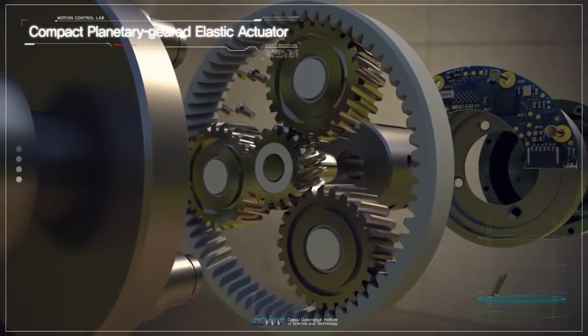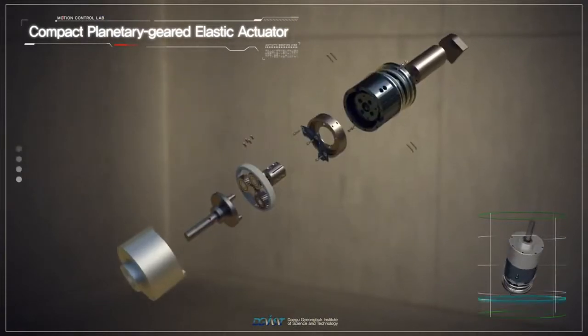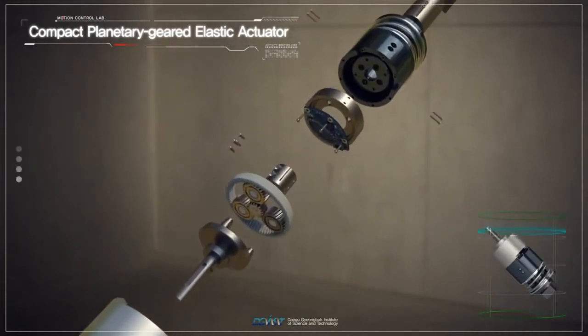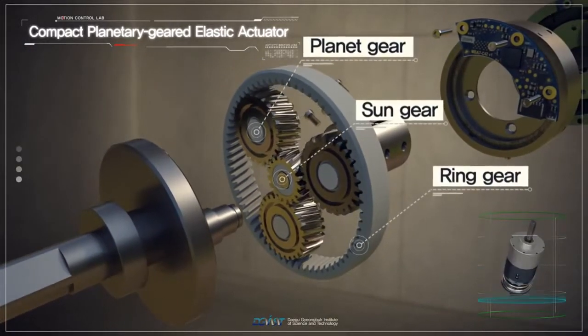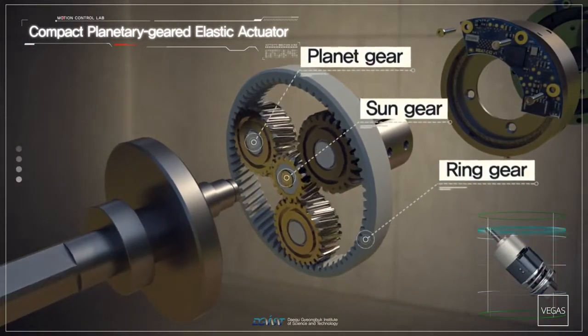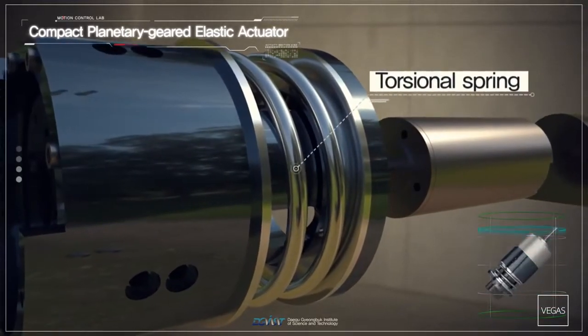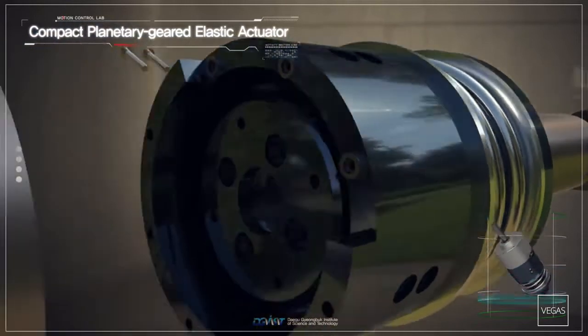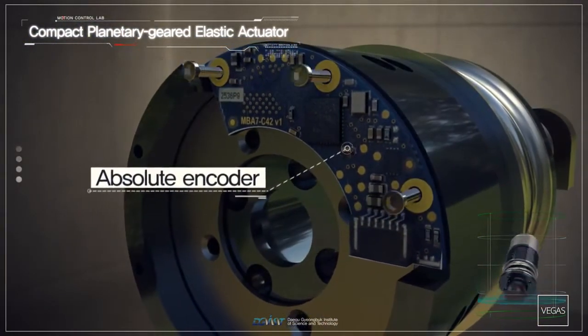Our CPEA compact planetary-geared elastic actuator is composed of a drive motor that creates rotational force, reduction gear consisting of sun gear, planetary gear, and ring gear, spring coil type elastic component, and interaction force control part that controls the drive motor by measuring force and the amount of spring deformation.